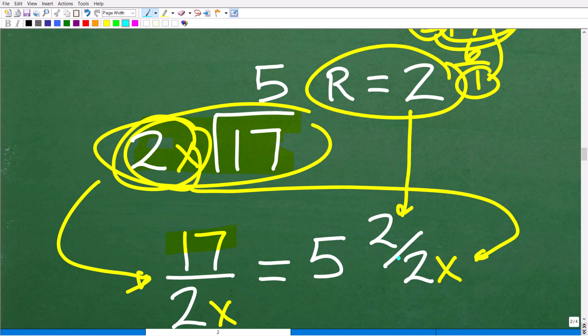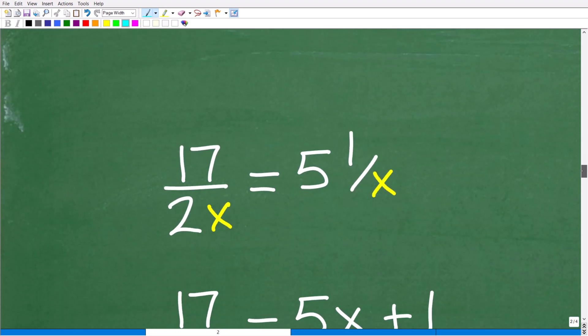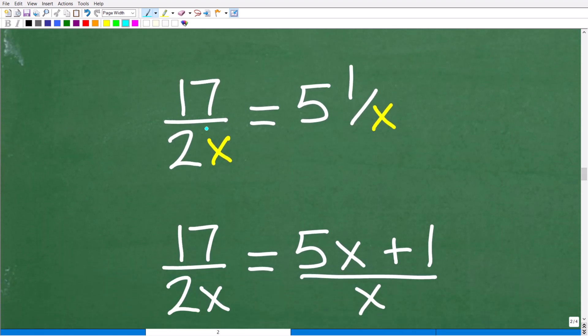Now, here, I can simplify this fraction right here. These 2s cross-cancel, so really this is 5 over 1x. OK, so again, you're going to need to be up to speed on your algebra skills to figure out what I'm doing. But if you understand that, let's go ahead and take the next step. All right, so we have 17 divided by 2x. Of course, this is our problem. We're just expressing this as a fraction like this, and that's equal to 5 and 1 over x. Now, of course, I just explained to you why this is the case. So now, let's go ahead and solve for x or figure out what x is equal to.